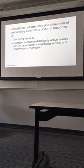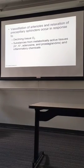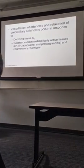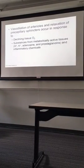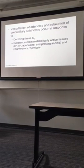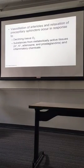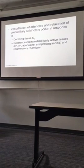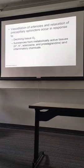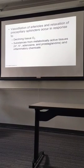They give you a list here of some chemicals. Substances from metabolically active tissues. H+ there, that's the functional ion in an acid, so acidic conditions will cause vasodilation. Potassium ion can cause vasodilation. Next one's a big one: adenosine, that's a vasodilator. And some pro-inflammatory compounds like prostaglandins and histamine.